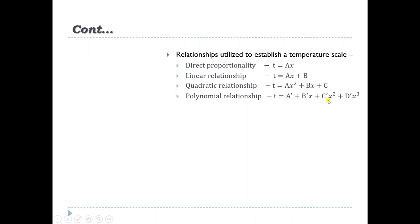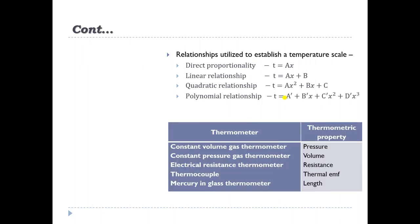For higher-order relations, we can use T = ax² + dx³. The constants appearing in these relations can be determined from two fixed thermometric points, for example the ice point and steam point. The different kinds of thermometers with their thermometric properties are listed accordingly.